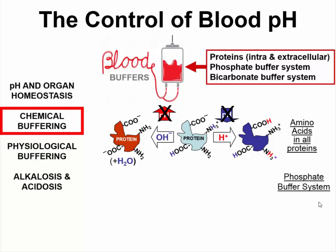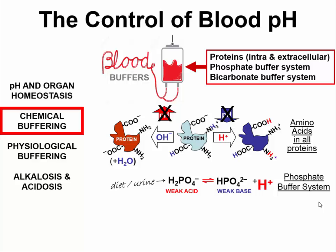The second buffering system of the blood is the phosphate buffer system. This comprises dihydrogen phosphate, which is a weak acid obtained through your diet and excreted through your urine. Being a weak acid, it can dissociate into hydrogen phosphate and hydrogen ions. Any increase in hydrogen ion concentration can be met with resistance through a change in the equilibrium towards the left, reducing the hydrogen ion concentration by producing more dihydrogen phosphate. Conversely, any fall in the hydrogen ion concentration shifts the equilibrium to the right, reducing the amount of dihydrogen phosphate in the blood, restoring the equilibrium and bringing pH back to the optimal range.